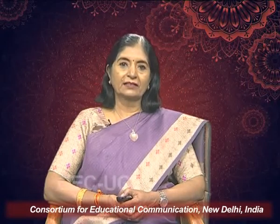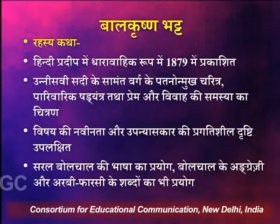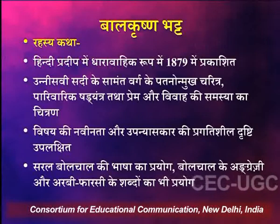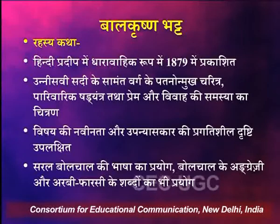Iske baad ek aur sahityakar, pramukh roop se jo is samay maane jaate hain, vye hain Balkrishna Bhatt, jinhone Hindi Pradip patrika ka sampadhan kiya. Aur unka pramukh upanyas Saujan Charitra ka tha, jo dharavaahik ke roop mein 1889 mein Hindi Pradip mein prakashit hua. Unnisvin shatabdi ke samantvarg ke patan mukh charitra ko ismein chitrit kiya gaya hai. Parivarik shadyantr, prem aur vivah ki samasya ka chitran is upanyas mein milta hai. Vishay ki drishti se dekhen to naveen vishay tha aur upanyaskar ki pragatisheel drishti is upanyas mein uplakshit hoti hai. Saral bolchal ki bhasha ka prayog kiya gaya hai. Upanyas ke kshetra mein Balkrishna Bhatt ka ek mahatvapurna yogdan raha hai.